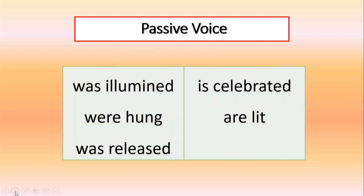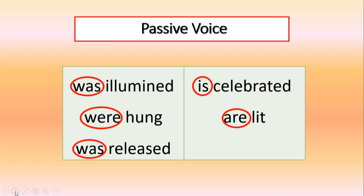Let's go back to these verbs in the passive form. As we saw earlier, we have was or were, and is or are. In each of these verbs, the main verb is in the past participle form: illumined, hung, released, celebrated, and lit are all in the past participle.